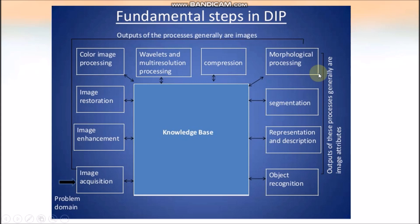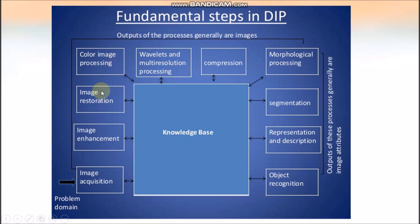Then comes morphological image processing. It deals with tools for extracting image components that are useful for the representation and description of shape and other structures present in an image. It is important to note that the output of processes like restoration, enhancement, and compression is generally an image — we input an image and get an image as the result.